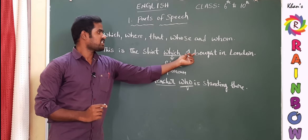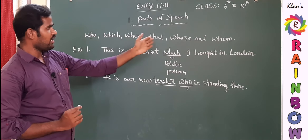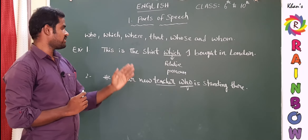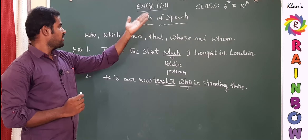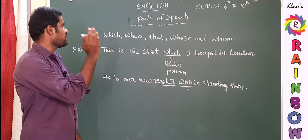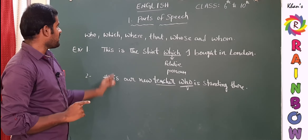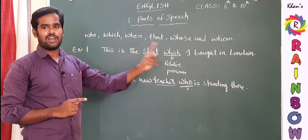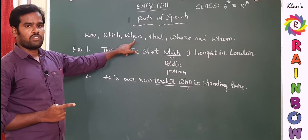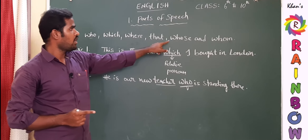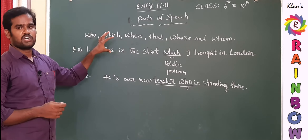Your task for today is to frame more statements using relative pronouns. Remember: relative pronouns are placed after nouns or pronouns only. Who is used after persons; which is used after places or things; where is used after places; that is used after things; whose and whom are used after persons. Please do remember this rule. This is the first type of pronoun.